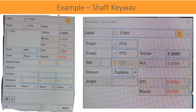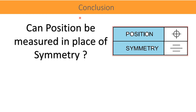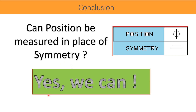Comparing the results of symmetricity and position for the same point measured on the shaft with reference to the axis of the cylinder, the result is 0.0366 — exactly the same for both controls. The conclusion: can position be measured in place of symmetry? Absolutely yes, we can.